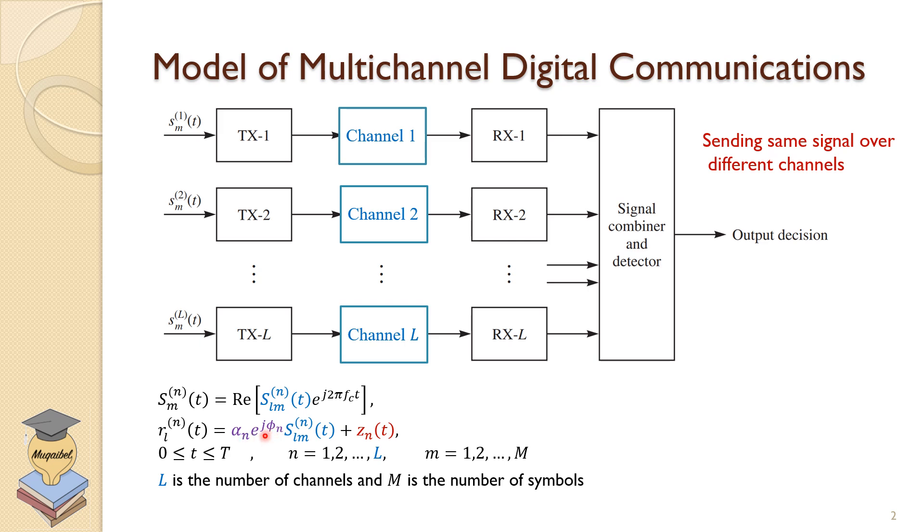And that scale and phase delay depends on the channel because every channel is going to have different fading effect or different scale and phase. This is why we have subscript N. And of course, we'll have noise added, which is also different from one branch to another.